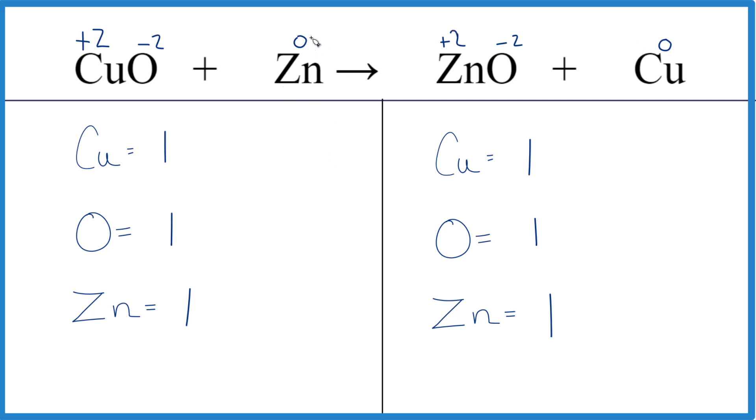The zinc starts out with zero, and then it goes to plus two. So it lost two electrons. So when you lose those electrons, that's oxidation.